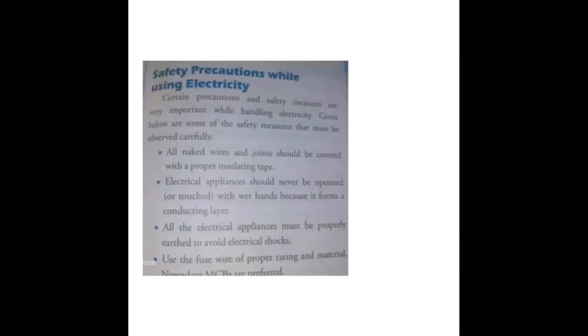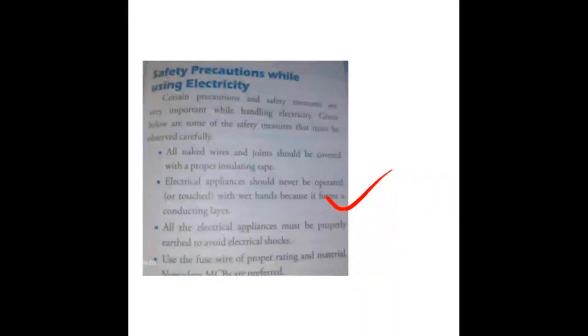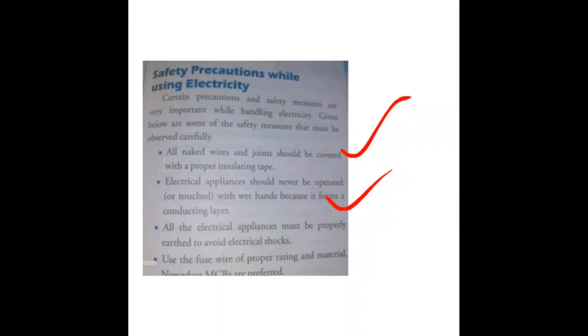Safety precautions for using electricity: do not operate live wires with wet hands, ensure all wires have proper insulation, put insulation tape around all naked wire connections, make sure appliances are properly earthed, and use a fuse with proper current rating. For lights and fans use a 5 ampere wire; for heavy appliances like geysers, use a higher rating such as 15 ampere or more.